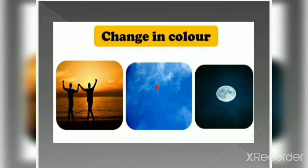During sunset or sunrise, the color of sky is somewhat yellowish, as you can see in the picture. But the sky appears to be blue during the day, and at night the sky appears to be dark. This kind of change, which we observe on a daily basis, is change in color.